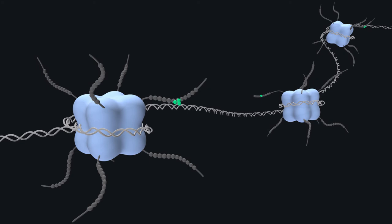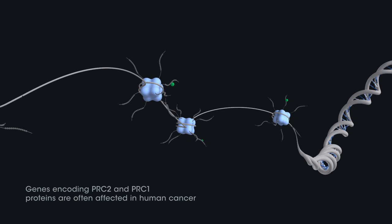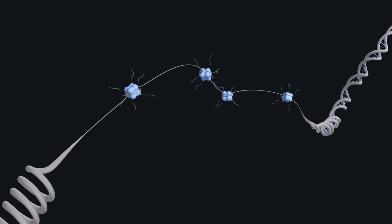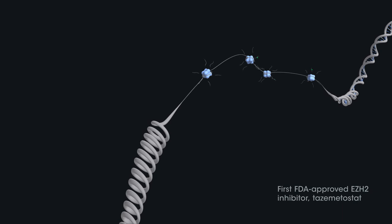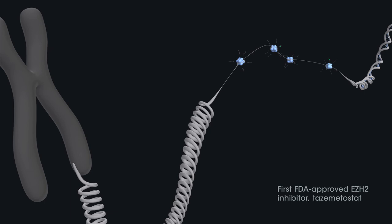Genes encoding PRC2 and PRC1 proteins are often affected in human cancer, leading to the disruption of their function. Various chemical compounds targeting polycomb proteins have been developed or are under development, including the first FDA-approved EZH2 inhibitor tazemetostat.